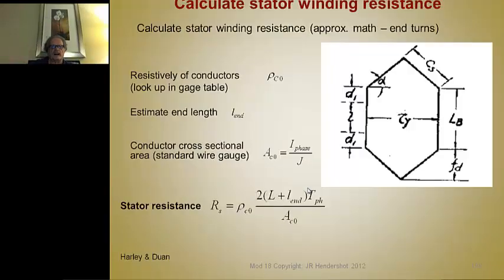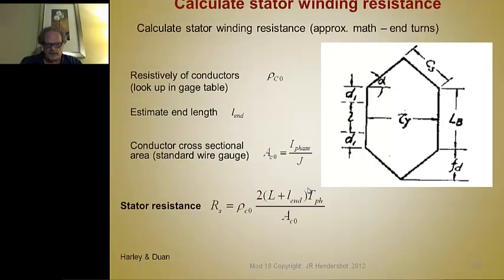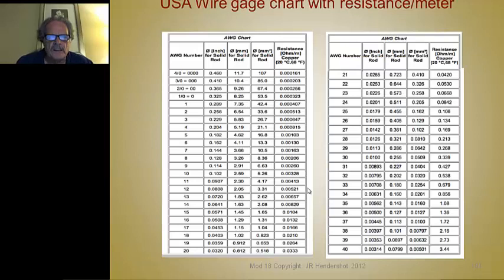Here's a pictorial view of how we determine the mean turn length. You can do this graphically — that's why scaled layouts of motors are so important. You can make these sketches by hand on draft paper or through computer CAD systems. Determine the length of each segment and that's your mean turn length. Multiply by the number of turns to get the total length of wire per coil, then multiply by resistance per meter. We also include a list of wire gauges — an AWG chart with diameter for solid wire and resistance in ohms per meter at 20°C. Note that resistance changes with temperature, so you can also calculate resistance at maximum operating temperature.